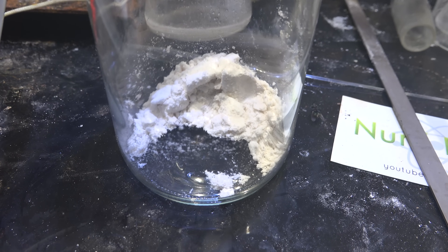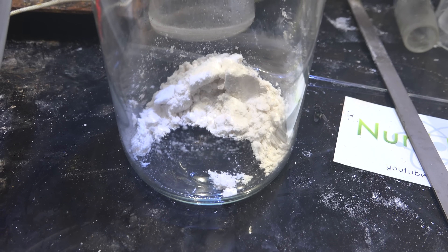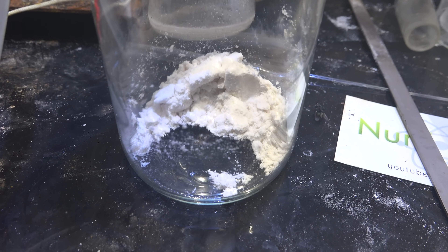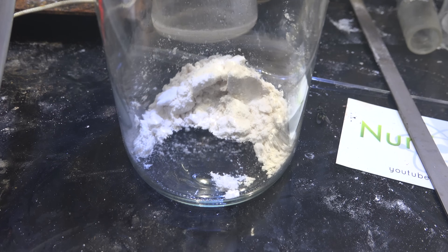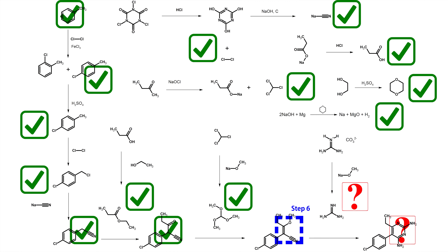And there it is — guanidine chloride. The total mass is 15 grams. This is a ludicrously expensive source for this chemical for this amount and I should probably figure out how to make it more cheaply. But for now I can move on to my pyrimethamine synthesis, as this is the last precursor. There is nothing left to do now except make my pyrimethamine — or fail trying.